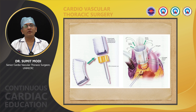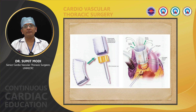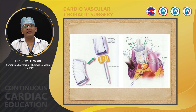Then 2-0 double-armed polyester sutures have to be passed from inside to outside at the subannular level. After passing the sutures, we once again check the competency of the aortic valve. Then all three commissural posts have to be passed through the graft, all sutures are passed through the lower end of the prosthetic graft, and the graft is lowered to the aortic annulus and tied.